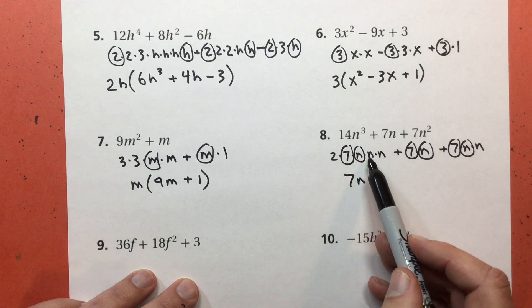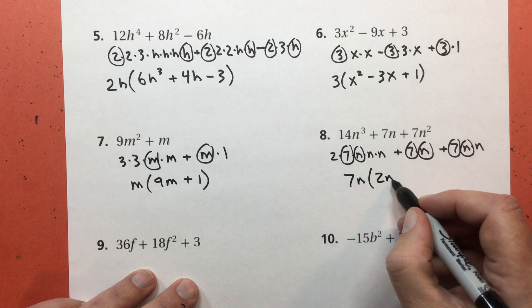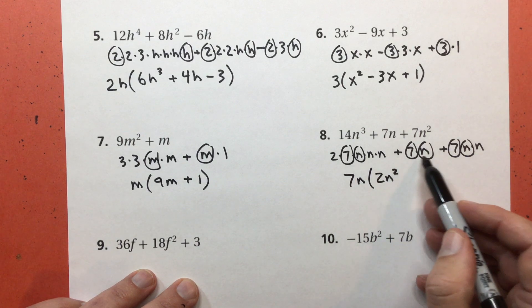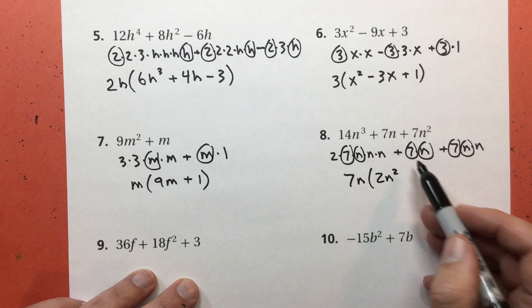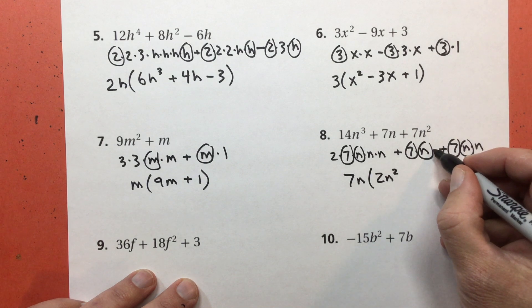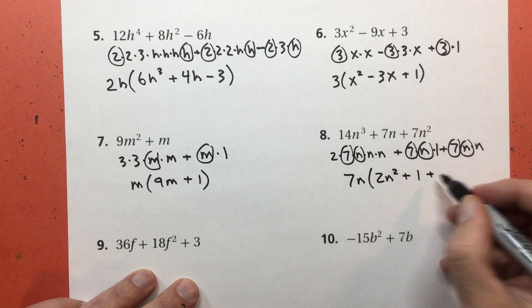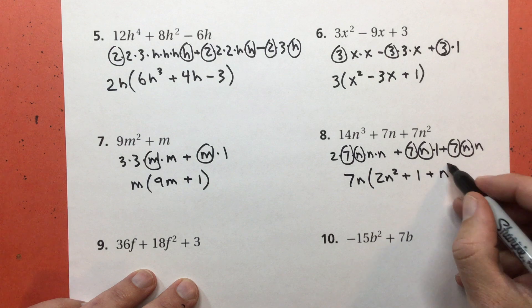So my common factor is 7 times N. What got left behind? 2 times N times N. 2N squared to the second power. What got left behind here? I took both of them. Remember, if you're going to take everything, the thing that got left behind is the hidden 1. So plus 1. And of course, what got left behind here was the other N.